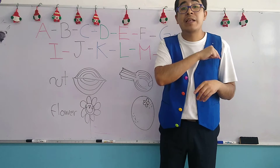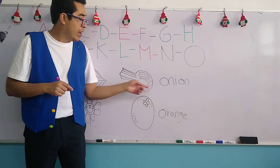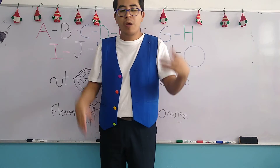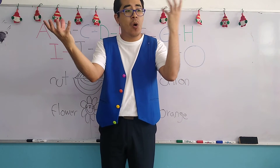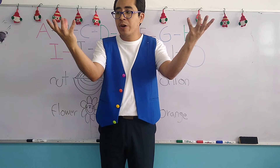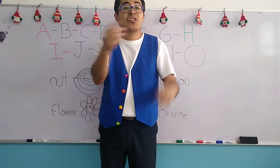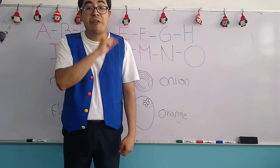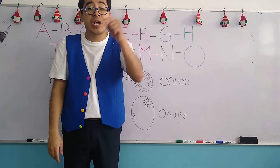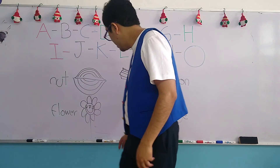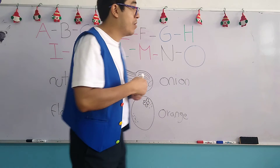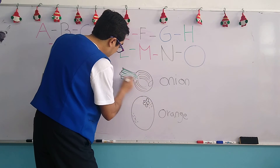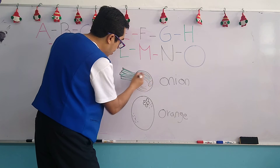Now, what about the onion? O — onion. Is it the same? Yes! O — onion begins with the letter O, so we are going to paint it. You can use purple or green for the onion. The teacher is going to go with green, so let's paint the onion because it begins with the letter O.